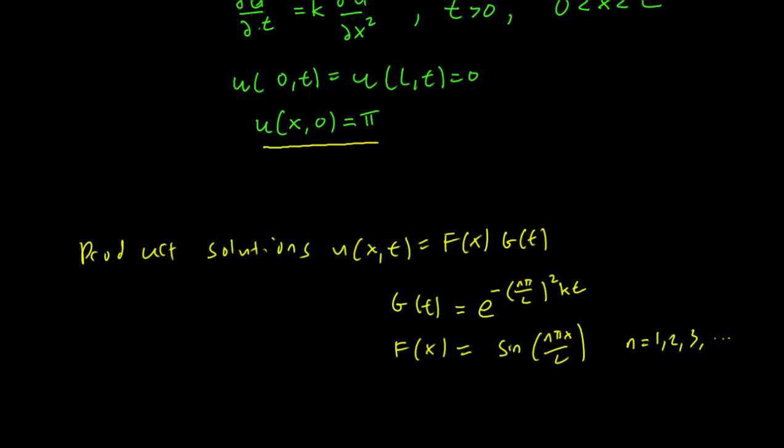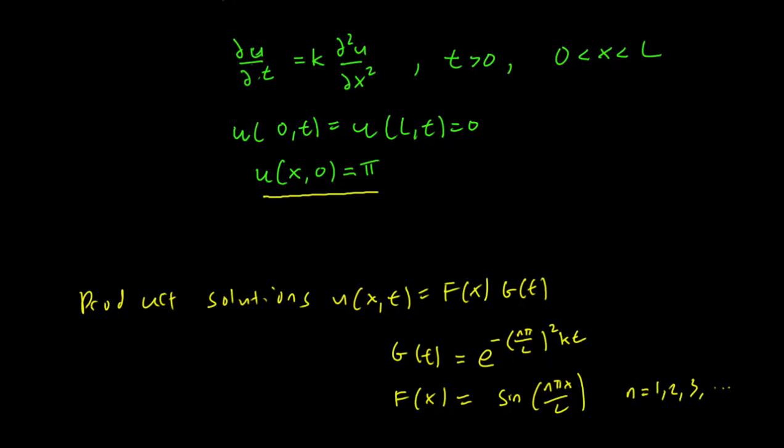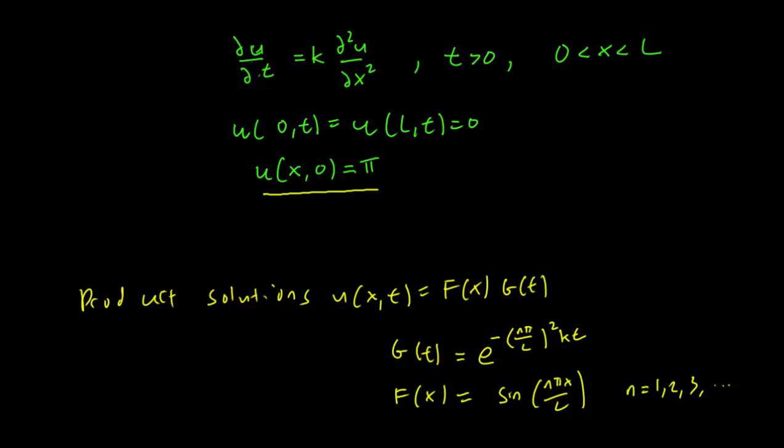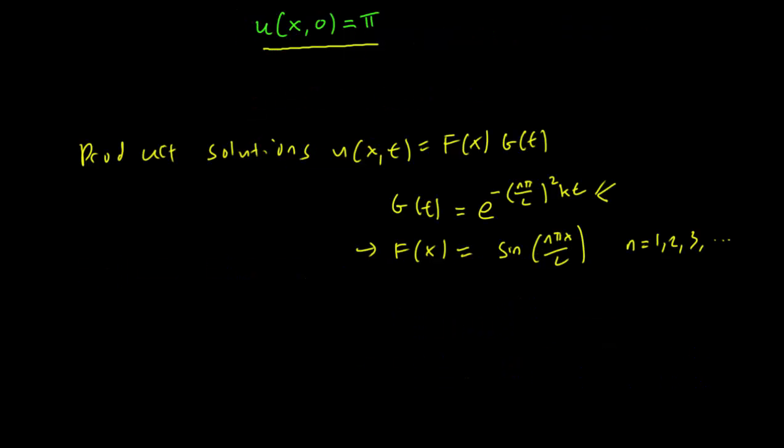Again recall that by plugging in the product solution u(x,t) equals f(x)g(t) into the heat equation formula, we reduce the differential equation for the heat equation into two equations. One that we can solve using separation of variables which is the g solution, and one which we solve using the eigenvalue method which is the f solution. So the product solutions are of the form u(x,t) equals e^(-n pi over L squared kt) times sine(n pi x over L).